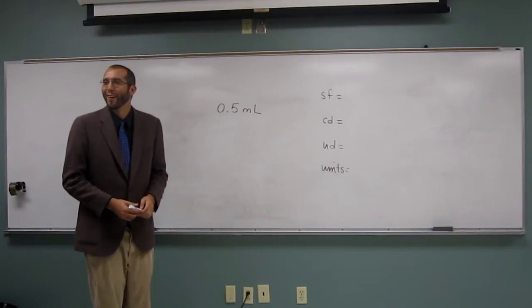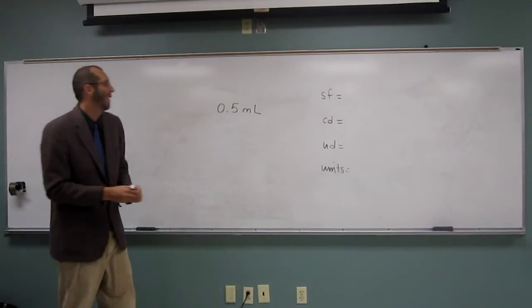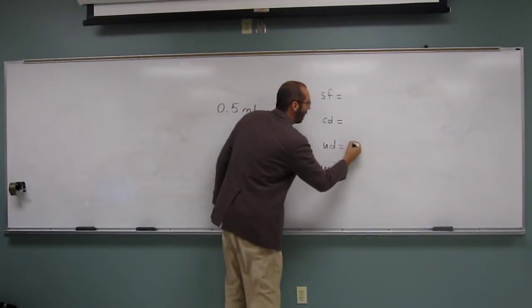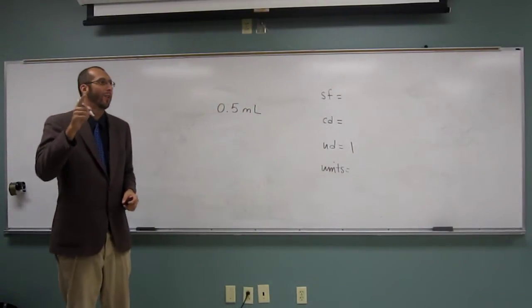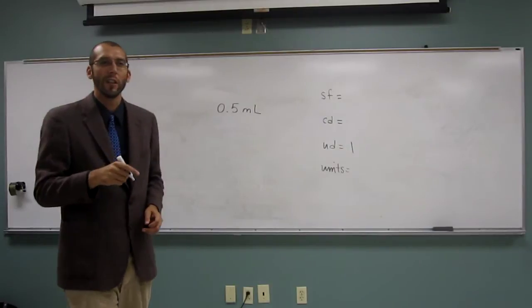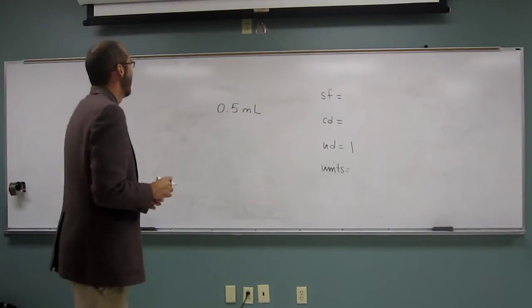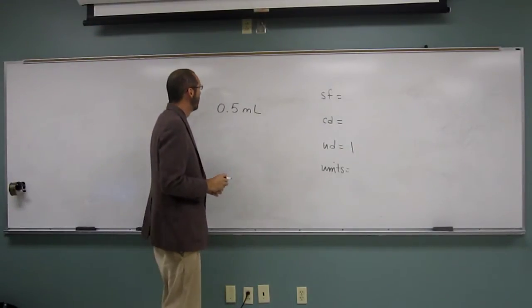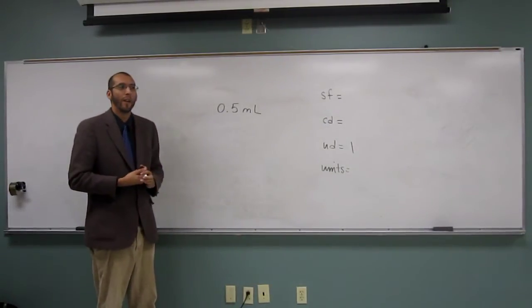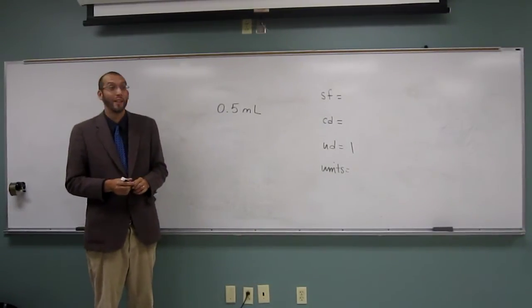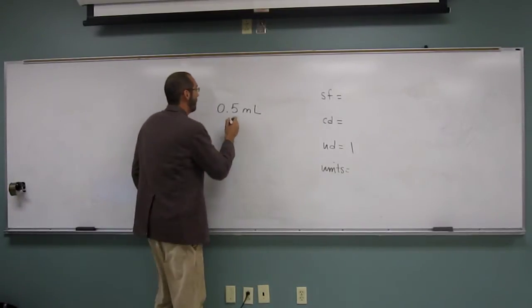One uncertain. Okay, one uncertain, right? Why would we say one uncertain? There's always only one uncertain digit in a measurement, okay? So which digit is it? Is it the zero or the five? The five is the uncertain digit, right?